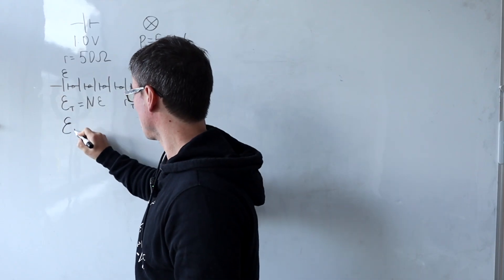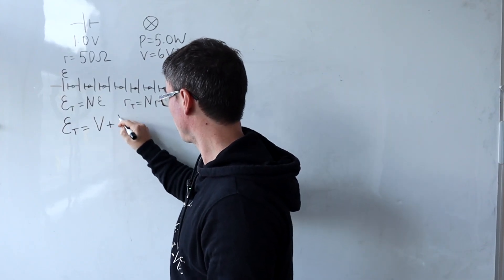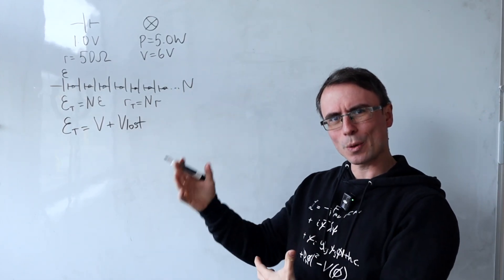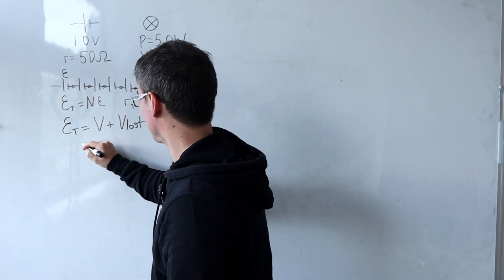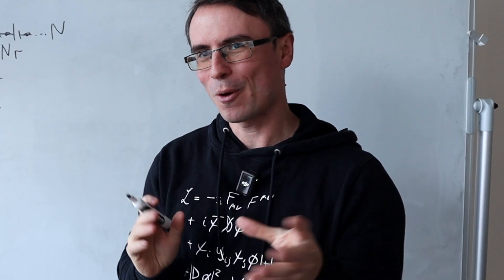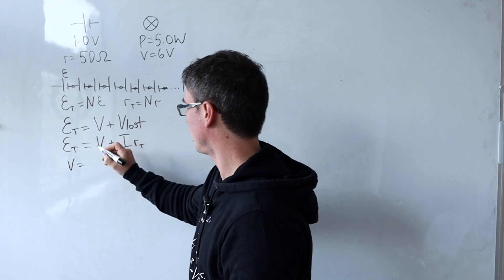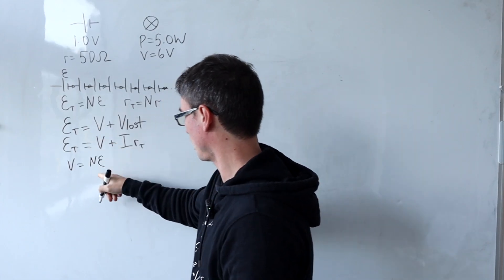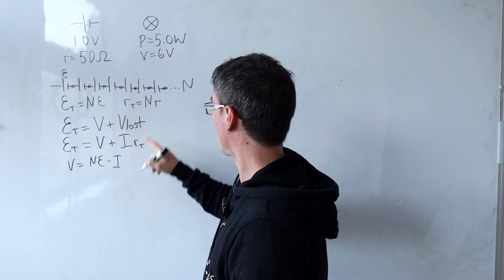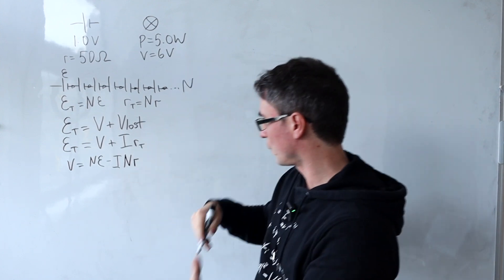We know that the EMF is equal to the sum of the terminal PD, let's call it V, plus the amount of lost volts. The lost volts equal I times the total internal resistance, where I is the current. So we can say E total equals V plus I·R total. Rearranging for terminal PD V: V equals N·E minus I multiplied by R total, which equals N multiplied by the internal resistance of each individual cell.